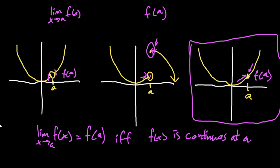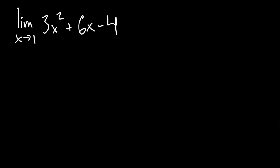Why is this important? We're not always going to find limits just by eyeballing graphs — sometimes we have to substitute directly into problems. For example, we're looking for the limit as x approaches 1 of 3x² + 6x − 4. We don't have a graph, but don't worry, because 3x² + 6x − 4 is continuous for all x — it's just a quadratic expression.